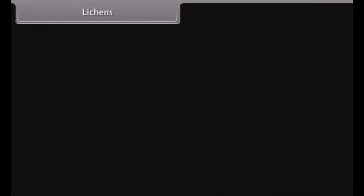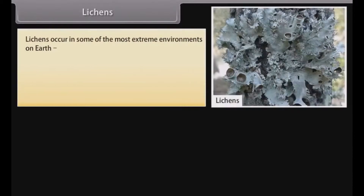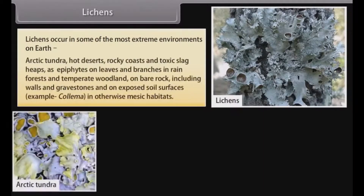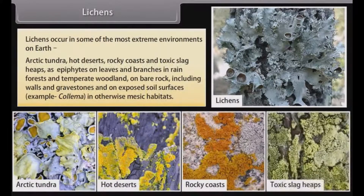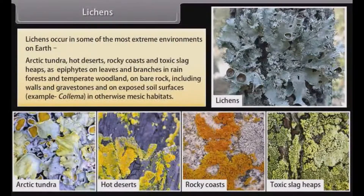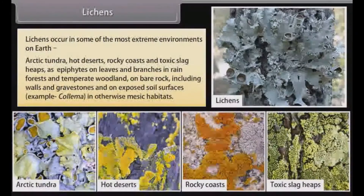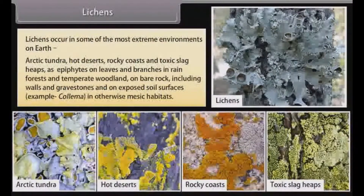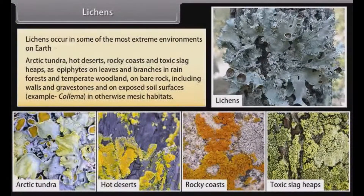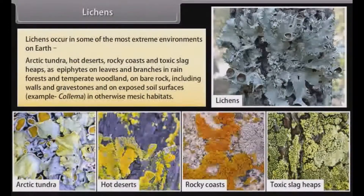Lichens occur in some of the most extreme environments on Earth: Arctic tundra, hot deserts, rocky coasts and toxic slag heaps; as epiphytes on leaves and branches in rainforests and temperate woodland; on bare rock including walls and gravestones; and on exposed soil surfaces in otherwise harsh habitats.